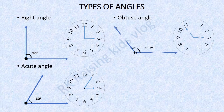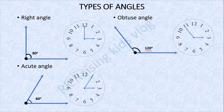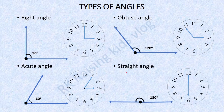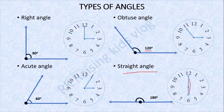Next is obtuse angle — an angle measuring from 90 degrees to 180 degrees is called an obtuse angle. Example: 120 degrees. Next is straight angle — an angle measuring exactly 180 degrees is called a straight angle. Example: 6 o'clock. It forms a straight line, so that's why it is called a straight angle.